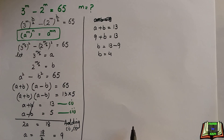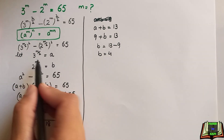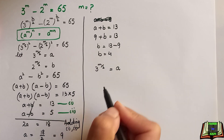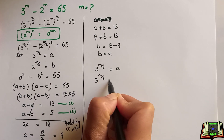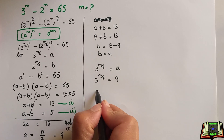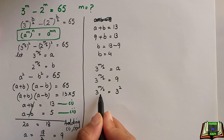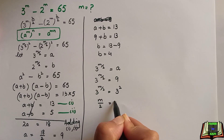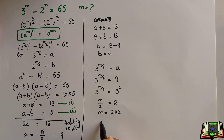We have the values of a and b, but we need to find m. Substituting back: 3 to the power m/2 equals a equals 9. We write 9 as 3 to the power 2. Since the bases are equal, the exponents must be equal, so m/2 equals 2, and therefore m equals 4.